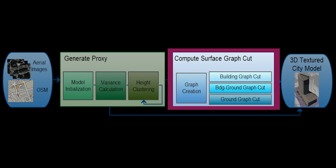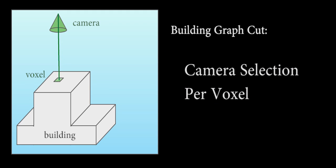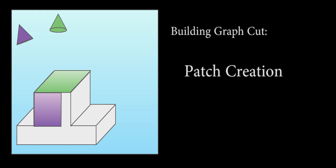The second step generates textured models using surface graph cut algorithms. Our building surface graph cut method overcomes errors of occlusion, geometry, and calibration in order to stitch together aerial images and yield a coherent visual result.